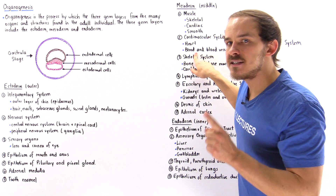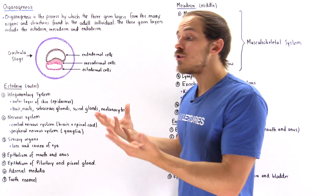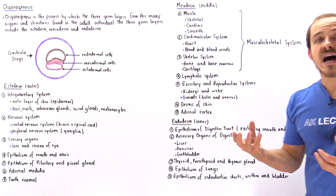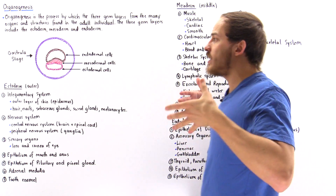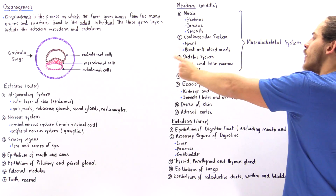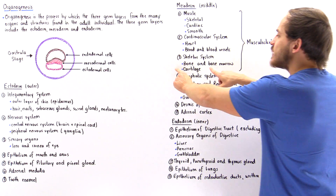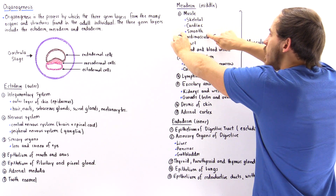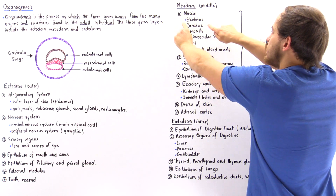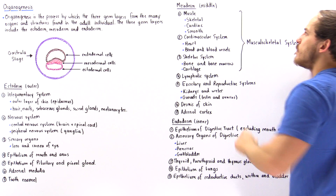Blood is a connective tissue, and the mesoderm forms this connective tissue as well as other connective tissues. Bone is also a connective tissue, so the skeletal system is formed from the mesoderm, which makes sense as it lies between the two layers. The mesoderm forms bone, bone marrow (both red and yellow), and cartilage. Together, the muscles, cardiovascular system, and skeletal system make up the musculoskeletal system — and since musculoskeletal begins with M, the entire musculoskeletal system is formed from the mesoderm.